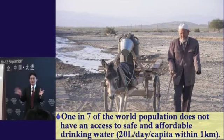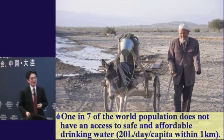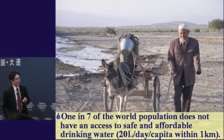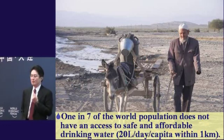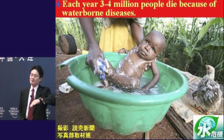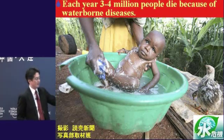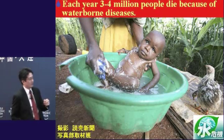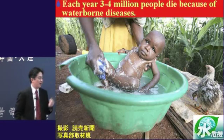I will talk about how to integrate these technologies and to develop sustainability in society. One in seven of the world's population doesn't have access to affordable, safe drinking water. But the key point is this number — the ratio is reducing, owing to all the international efforts to reduce the ratio of the person who doesn't have access to safe drinking water. In the past, it was said to be one in five of the world's population.